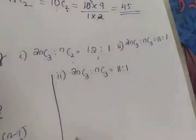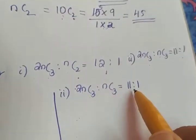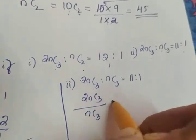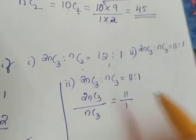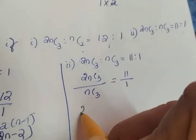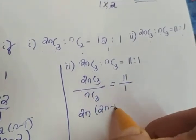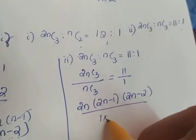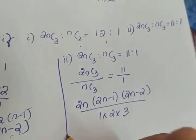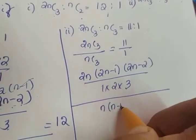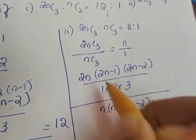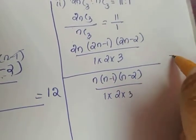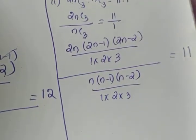Moving to the second part: 2NC3 to NC3 equals 11 to 1. We write 2NC3 divided by NC3 equals 11. Expanding: 2N into 2N minus 1 into 2N minus 2 divided by 1 into 2 into 3, whole divided by NC3 which is N into N minus 1 into N minus 2 divided by 1 into 2 into 3, equals 11.